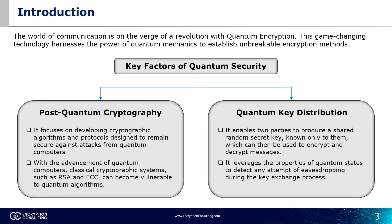In today's world where data breaches have become very frequent, cybersecurity has become more critical than ever before. Encryption is an essential tool that helps keep data secure and confidential. However, some traditional encryption methods have become increasingly vulnerable to cyber attacks. With quantum computing on the horizon, the date of traditional cryptographic algorithms breaking is not too far from today. Quantum key distribution comes in here — it is an emerging technology that offers a quantum-future-proof way of encrypting data. In this video, we will explore what quantum encryption and quantum key distribution are, followed by their applications in securing data transmission.